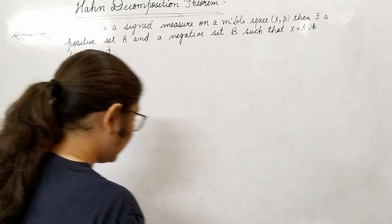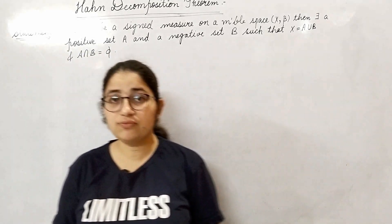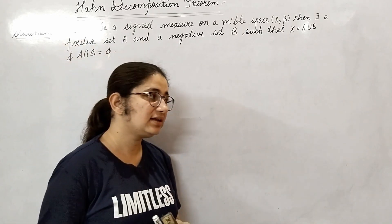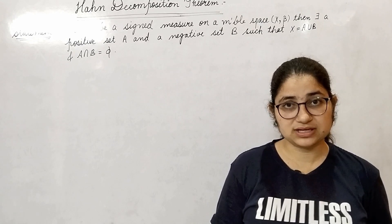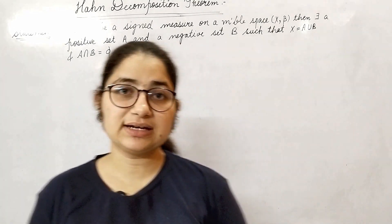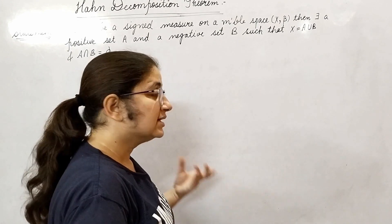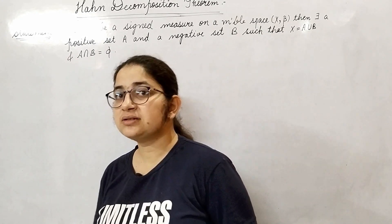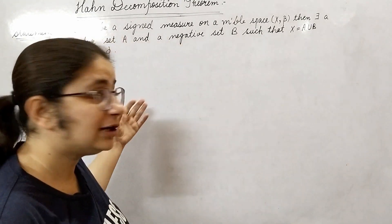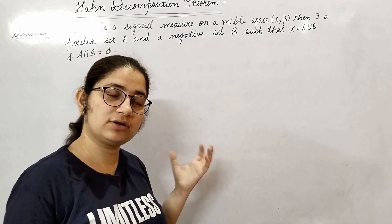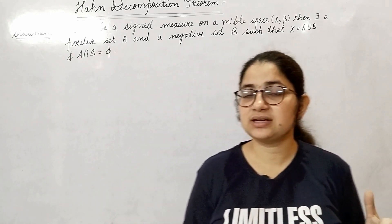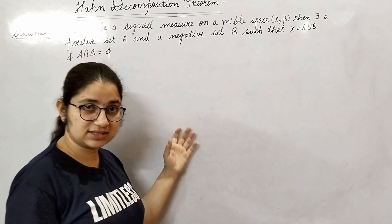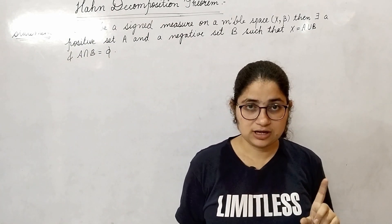In this proof we will define a signed measure. By definition, a signed measure can assume at most one of the values: either plus infinity or minus infinity, but it cannot assume both values. The difference between a signed measure and a regular measure is that in a signed measure we include the extended system — plus infinity or minus infinity — whereas in mu we do not.